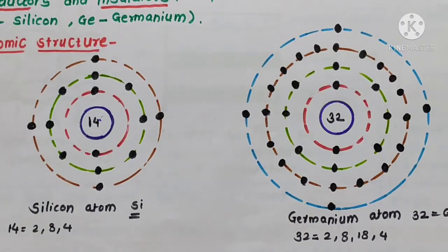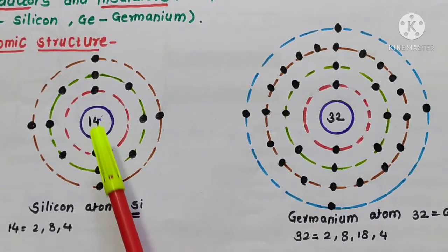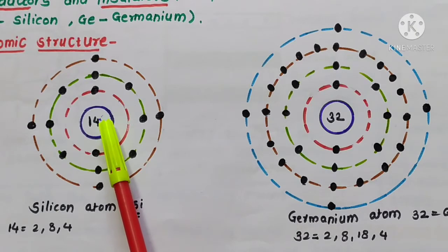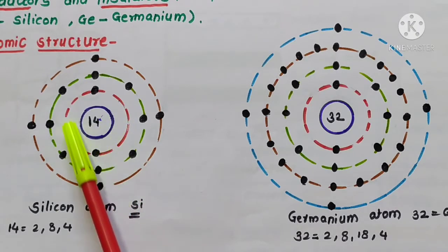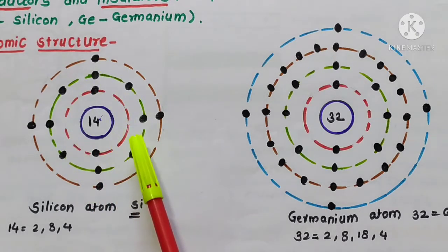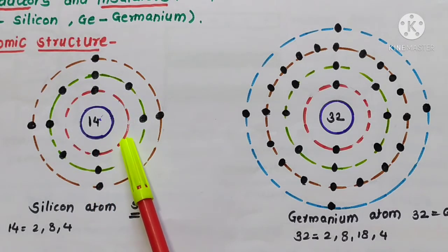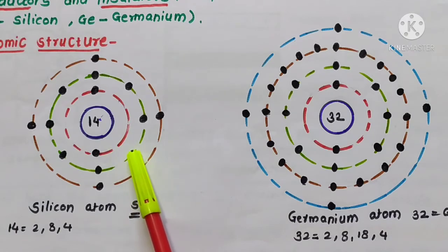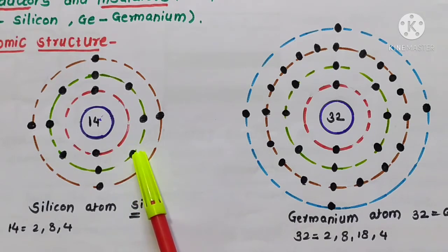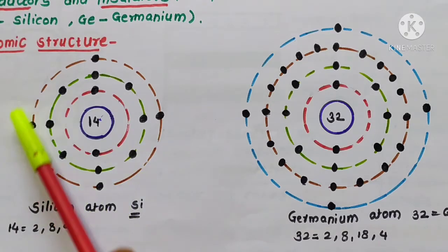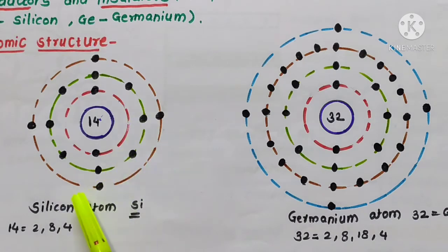Silicon has atomic number 14. So there are 2 electrons in the first orbit, 8 electrons in the second orbit, and in the third orbit, 4 electrons.